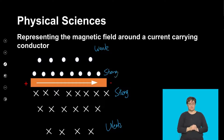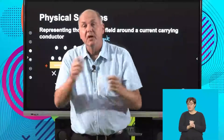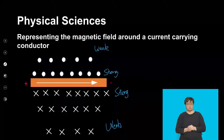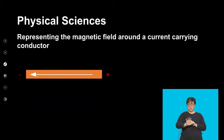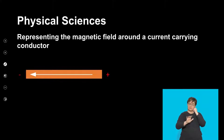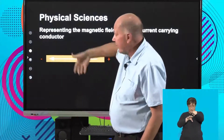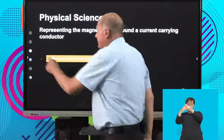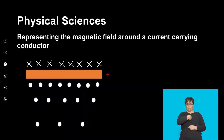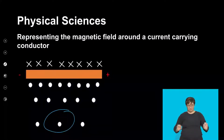What happens if we switch the terminals — if we switch the polarity of the battery? Now we've got the positive end on this side and the negative end on that side. We do exactly the same as before. We put the thumb in the direction of the current. At the top it's going in, and it's coming out at the bottom. That's exactly what I've represented here. Recognize again that when the field lines are far apart from each other, they're representing a weak magnetic field, whereas close together they're stronger.